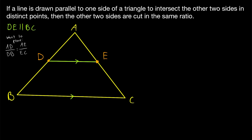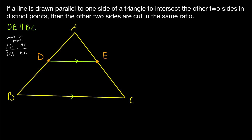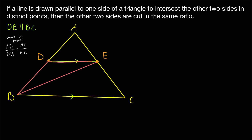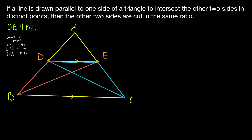I'll present the proof in a way that suggests how you might come up with it on your own. Since DB and EC are the segments whose ratios we want, it's useful to have triangles with DB and EC as side lengths. To get a triangle with DB as a side, we construct segment BE, giving us triangle DEB. Similarly, constructing segment CD gives us triangle EDC with EC as a side.